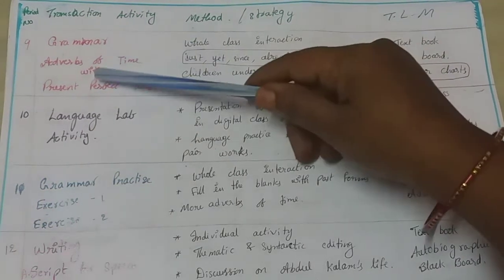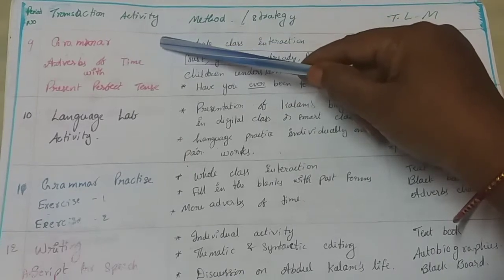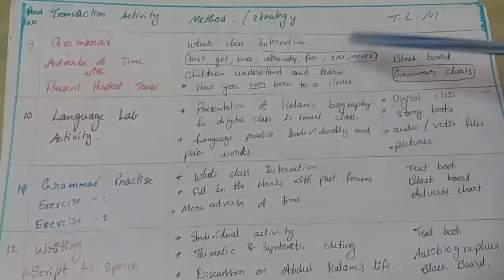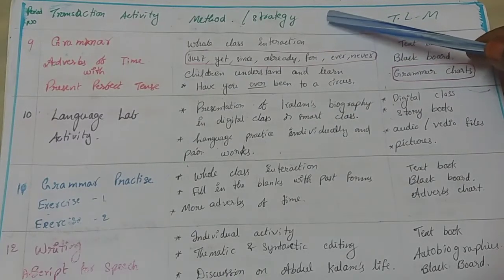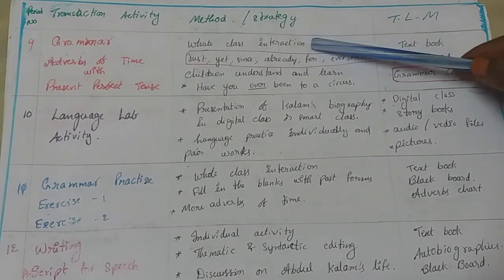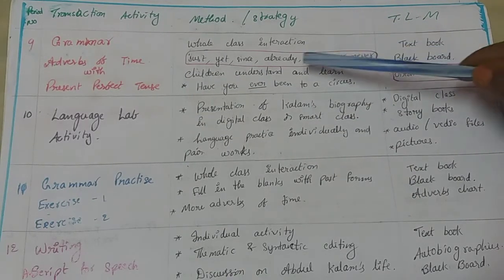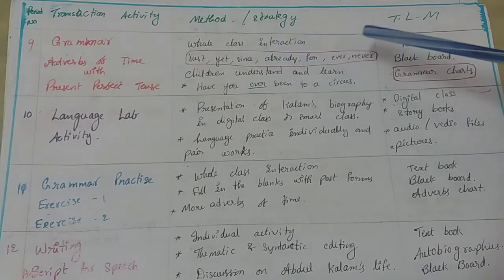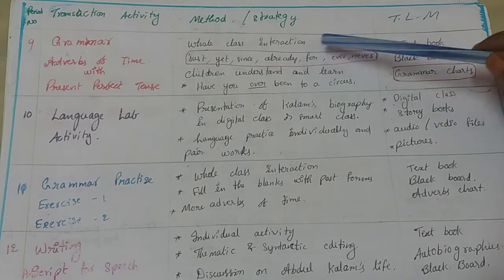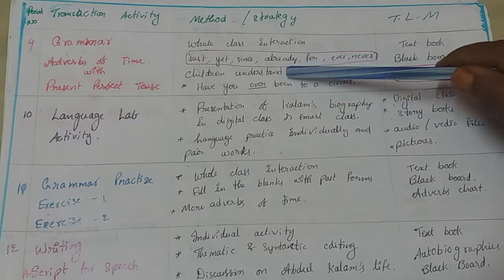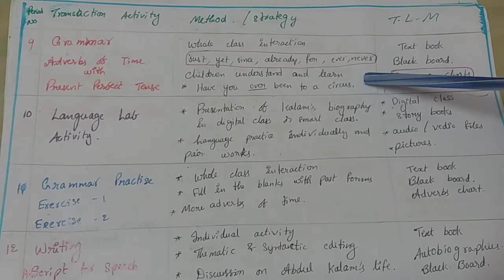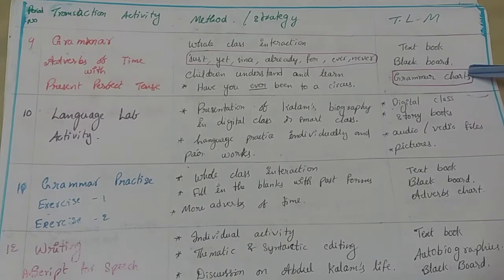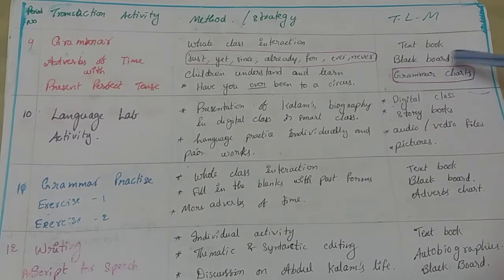In period 9, the transaction activity covers grammar and adverbs of time with the present perfect tense. It is a whole class interaction. We explain adverbs: just, yet, since, already, for, ever, never. Children understand and learn — for example, 'Have you ever been to a circus?' TLM: textbook, blackboard and grammar charts.